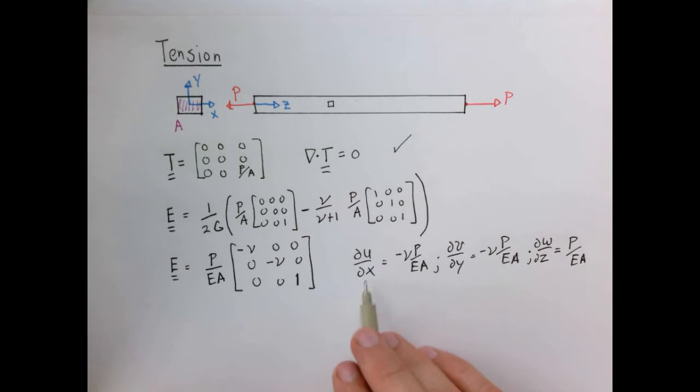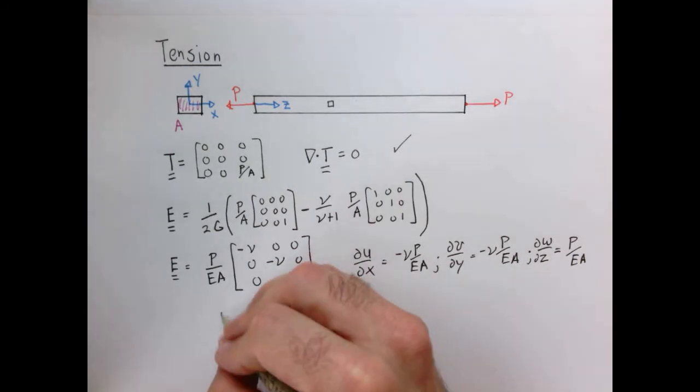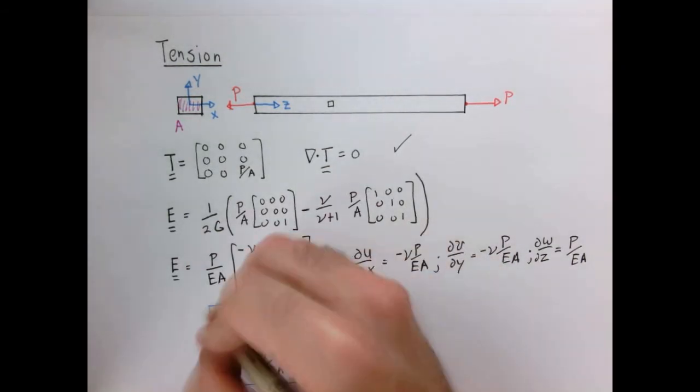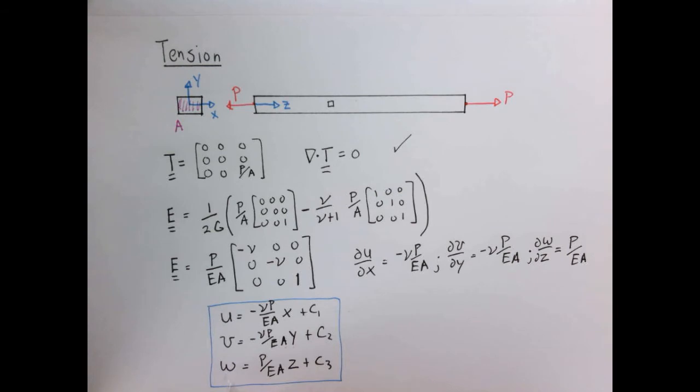Now these are easy equations to integrate because I just have partial derivatives equaling constants. So that becomes a quite simple set of equations. And so this would be our final result for the displacement vectors U, V, and W, which we know up to a constant of integration.